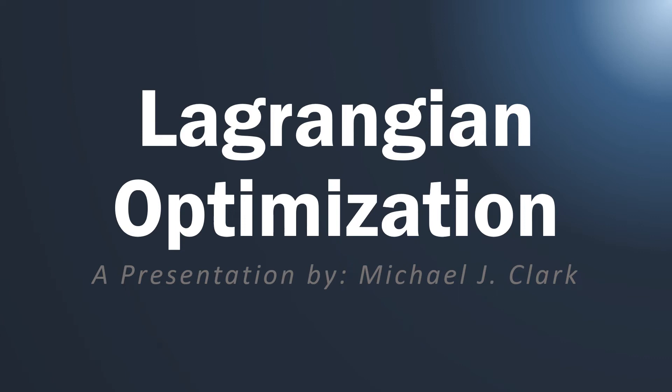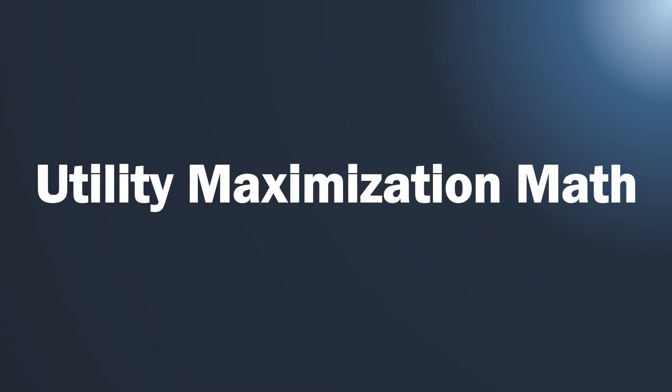We're continuing on in our lecture series on Lagrangian optimization. We're basically trying to find an optimization technique for the consumer — looking at consumer behavior and trying to model how consumers optimize. We've seen consumers represented in supply and demand curves and with indifference curves, but now we're using mathematics, specifically calculus and the Lagrangian approach, to show utility maximization.